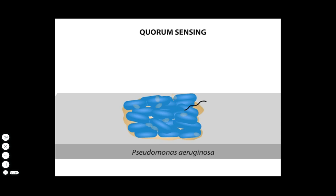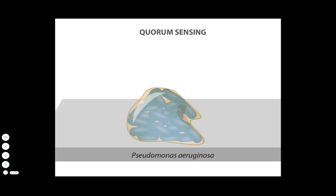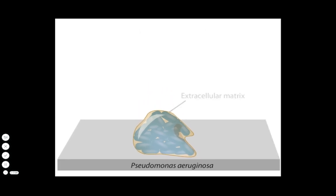Quorum sensing may influence the amount of extracellular matrix produced by the cells. This thick, slimy material consists of polysaccharide polymers called exopolysaccharides and entrapped organic and inorganic materials. The extracellular matrix protects the cells from damage from environmental assaults.